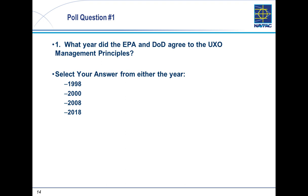That gets us to our first poll question. What year did the EPA and the DoD agree to the UXO management principles? The options are 1999, 2000, 2008, or 2018. Responses are coming in, and the correct answer is 2000.